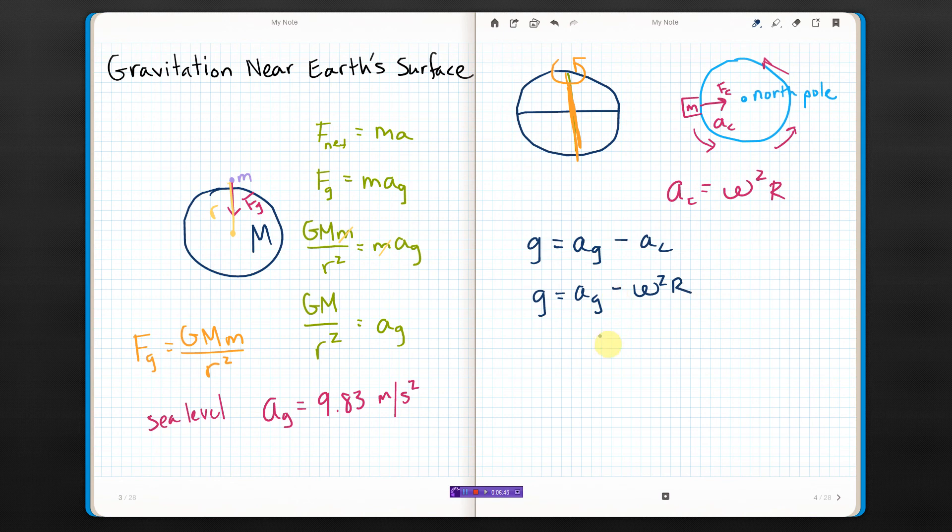Now for Earth, if you put all the numbers in, that ends up being near Earth's surface about 0.034 meters per second squared. So this is where our g is coming from. g near Earth's surface is about 9.83 from the acceleration of gravity minus this bit of it that's taken up to accelerate toward the center of the Earth, and that's what we end up getting. g is approximately 9.8 or 9.81.